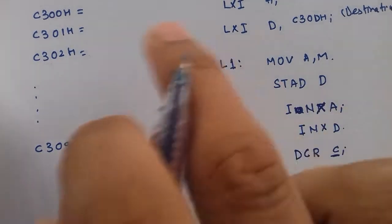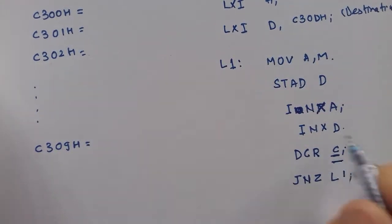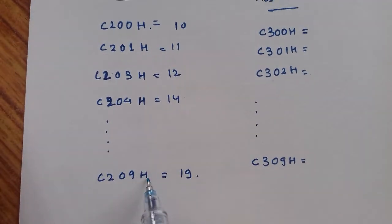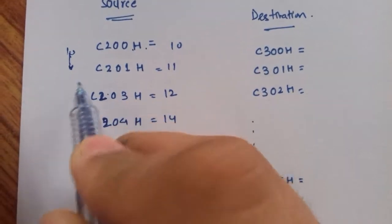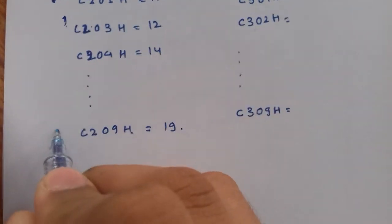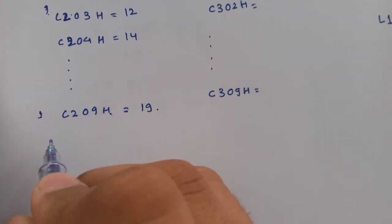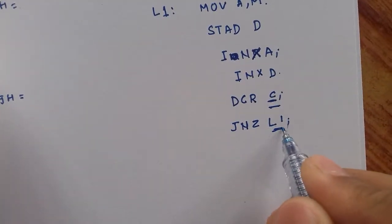This loop continues until the value of C is zero. That means we have already completed from first location to last location. First this is 10, then for second loop this becomes 9. For the last loop it becomes 1. For another loop if it tries it becomes 0. So this is the terminating condition.